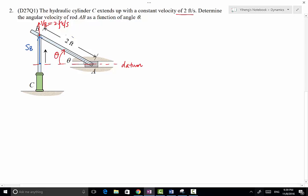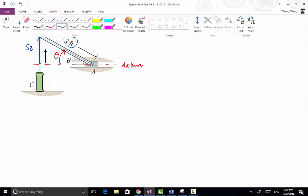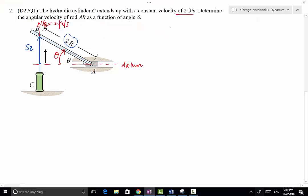Because this length AB is always constant, it doesn't matter how theta changes. The geometric relation is always satisfied that S_B equals two feet times cosine—sorry, sine theta. So this is always true.